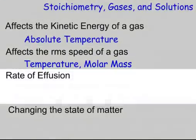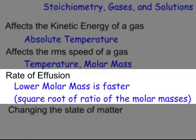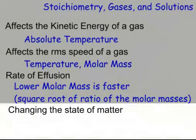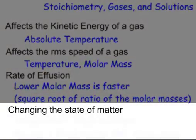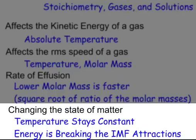And we call that effusion. And the rate of effusion, the lower molar mass, the faster. And remember, that's the square root of the ratio of the molar masses. Like if we have oxygen gas and hydrogen gas, oxygen gas is 32 grams per mole, hydrogen gas is 2 grams per mole, the ratio is 16. But it's not 16 times faster. Hydrogen gas is only the square root of that, 4 times faster.